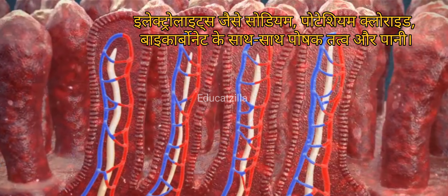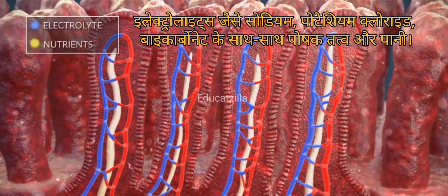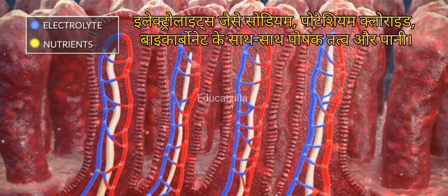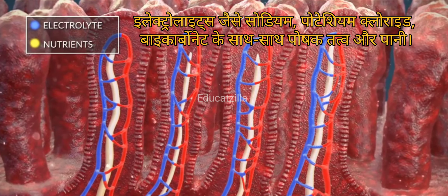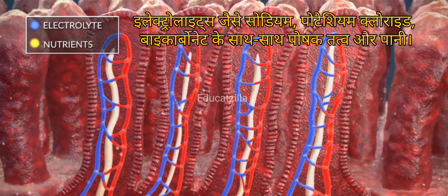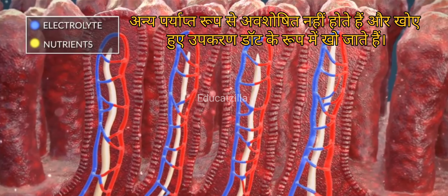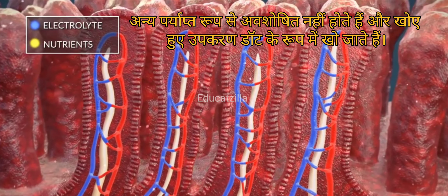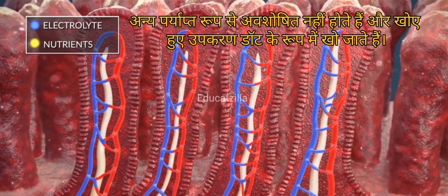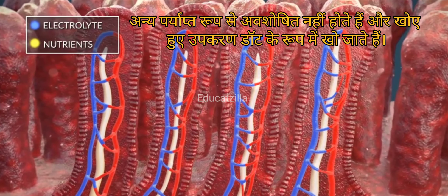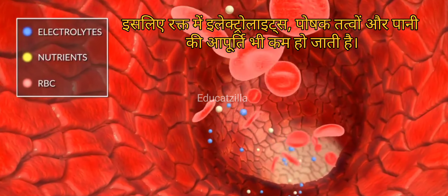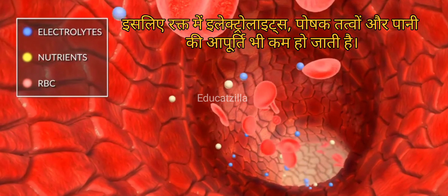Electrolytes like sodium, potassium, chloride, and bicarbonates, as well as nutrients and water, are thus not absorbed adequately and are lost in the form of loose watery stools. Therefore, the supply of electrolytes, nutrients, and water to the blood is also reduced.